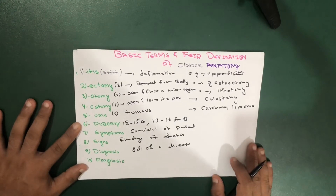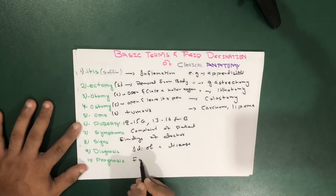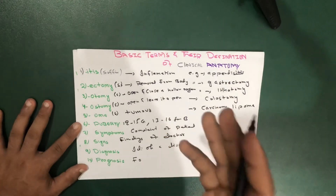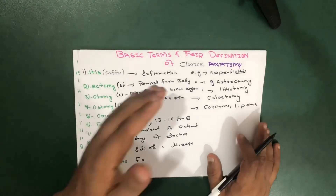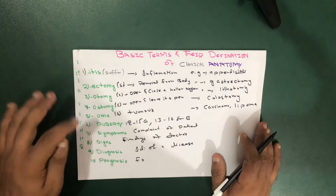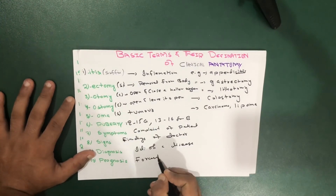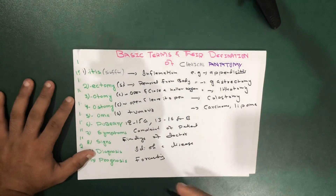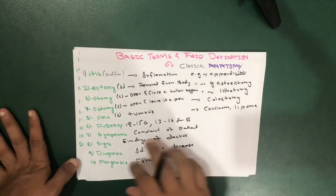Another term is prognosis, which means forecasting the probable course and ultimate outcome of a disease. For example, you tell a patient that if they take a certain drug, their prognosis is a particular outcome — it's like telling the future, forecasting the probable course and ultimate outcome of a disease. These are the basic anatomy definitions for these terms.